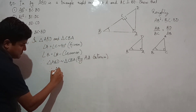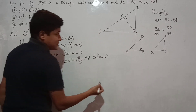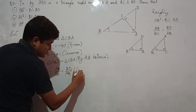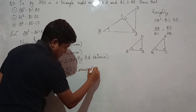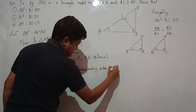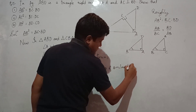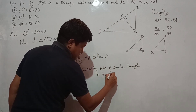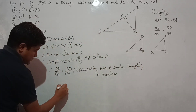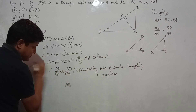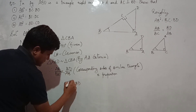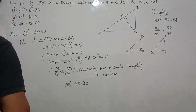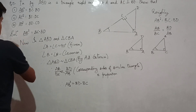Therefore, AB divided by BC equals BD divided by AB. The corresponding sides of similar triangles are proportional. Therefore, AB² equals BD·BC. This completes the proof for part (i).